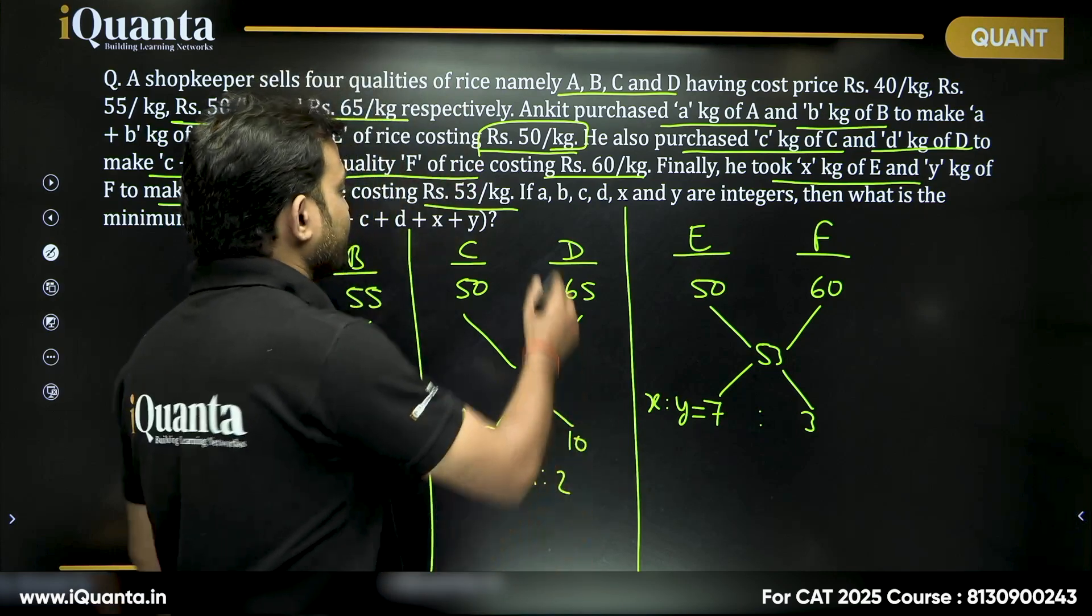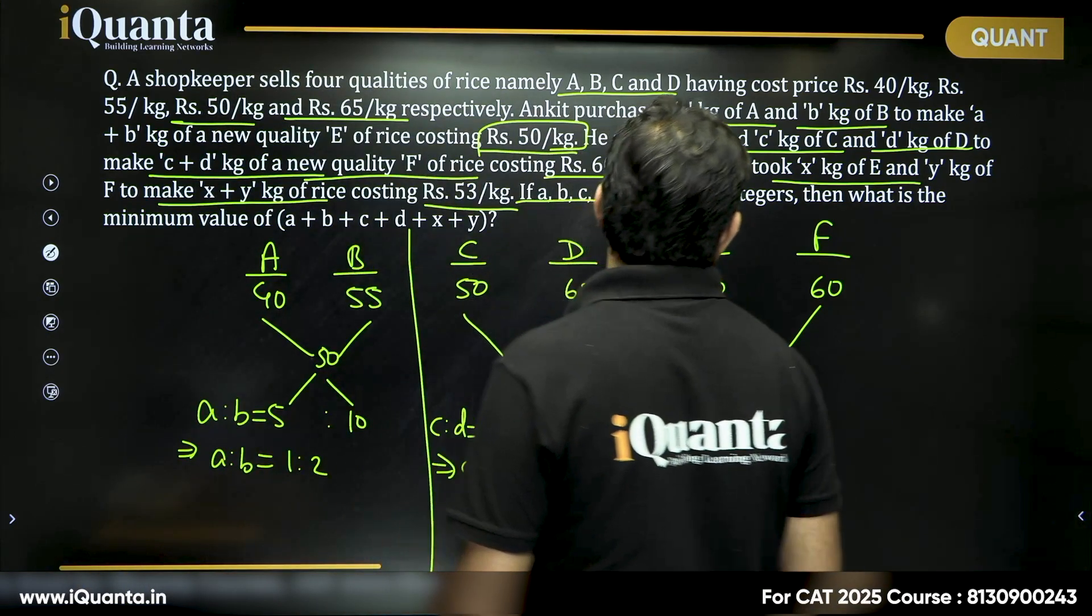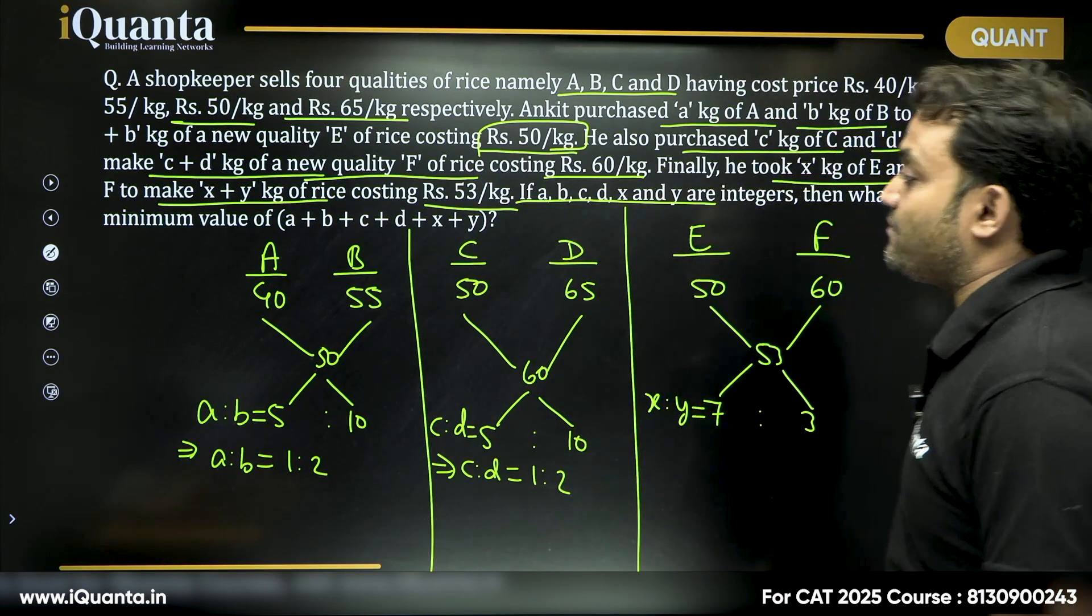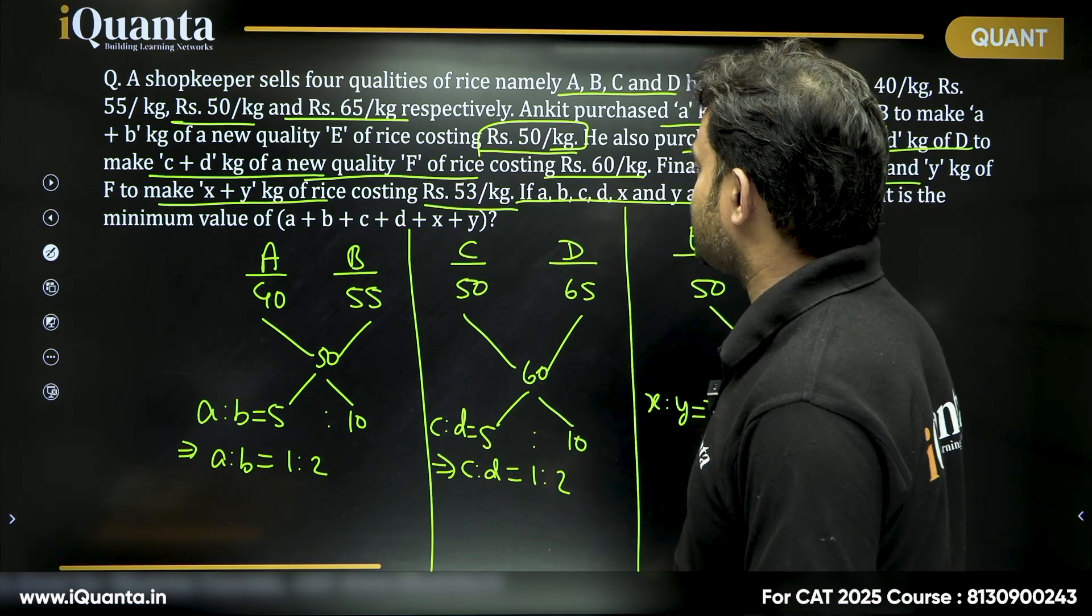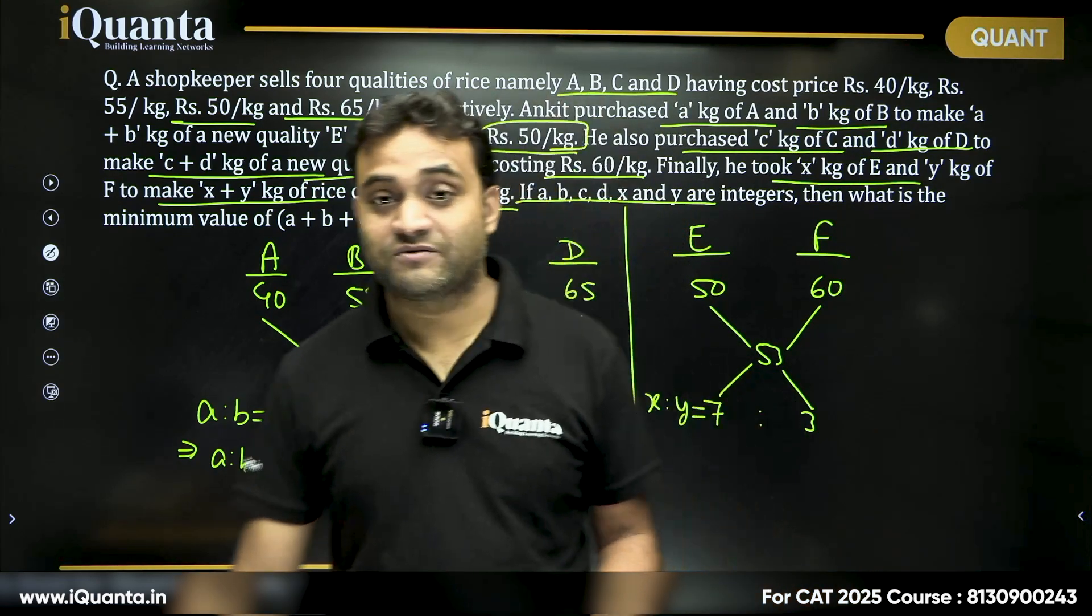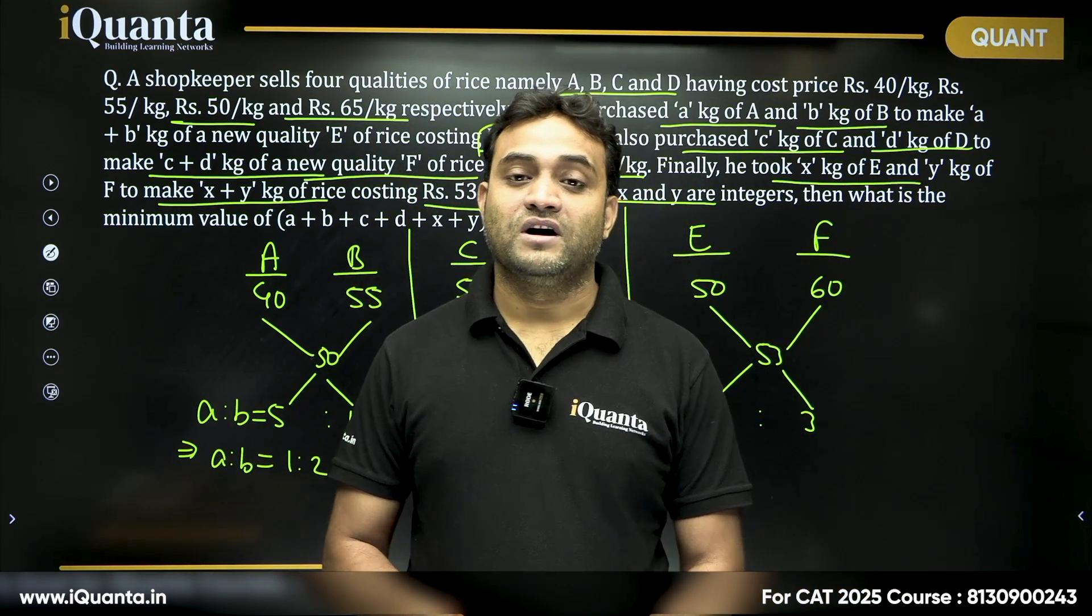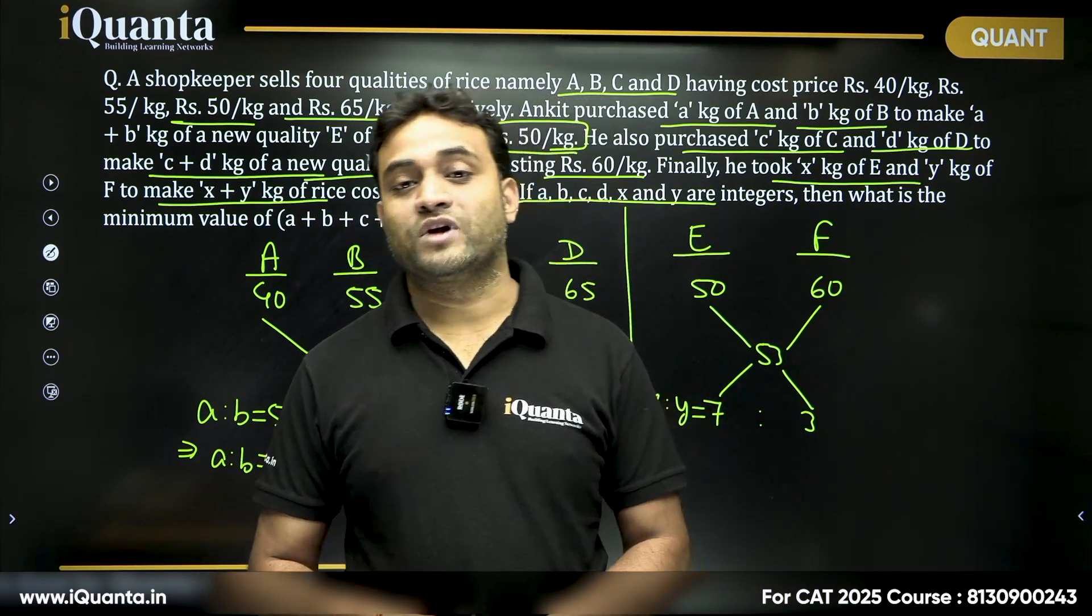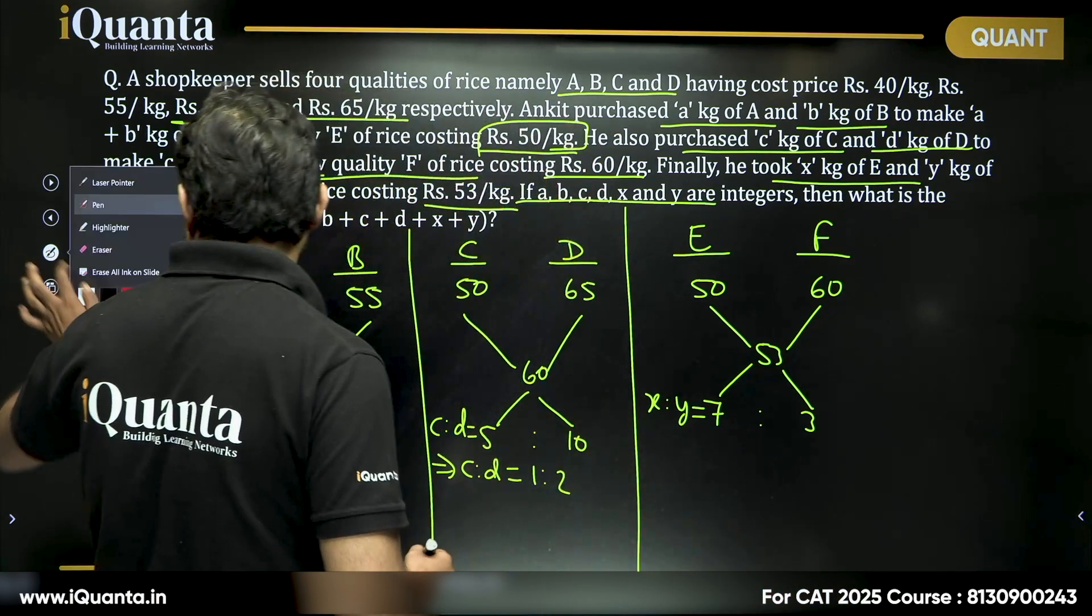Now, it says that if a, b, c, d, x and y are integers, then what is the minimum value of a+b+c+d+x+y? So, I am sure you must have tried this question, and now time for answer. What is the answer you got here? Let me know in the comments.